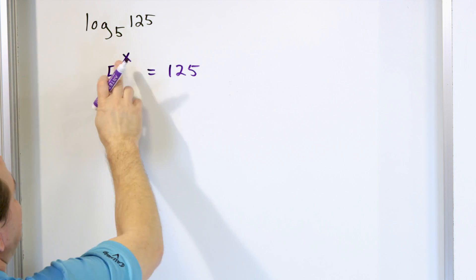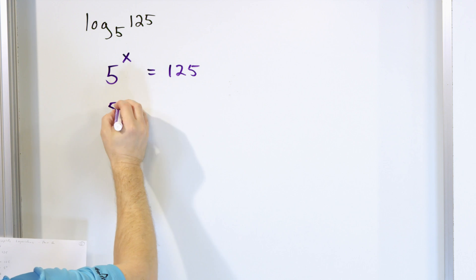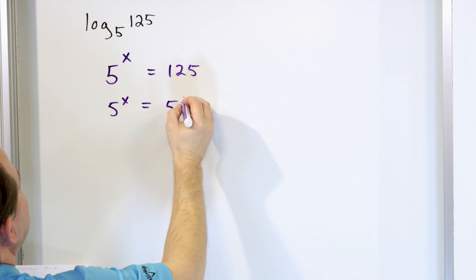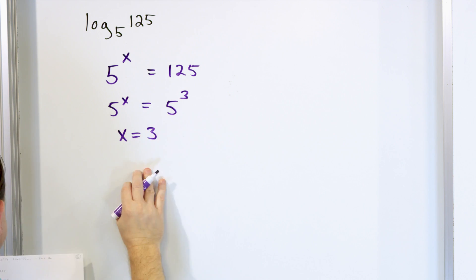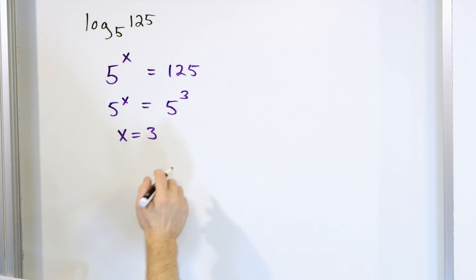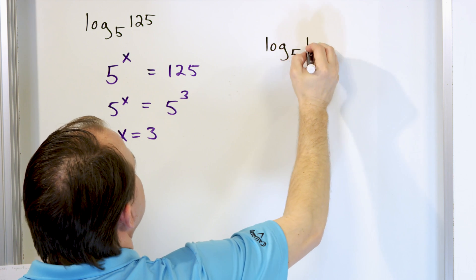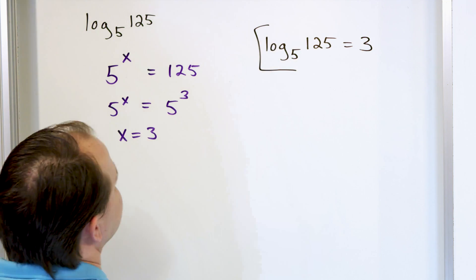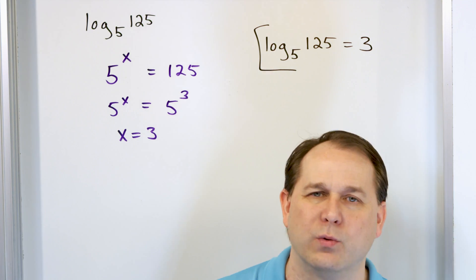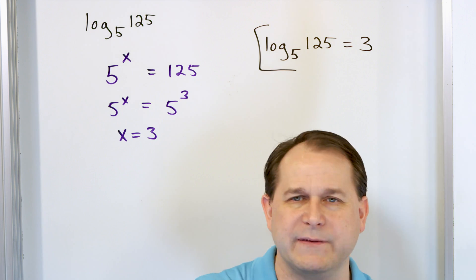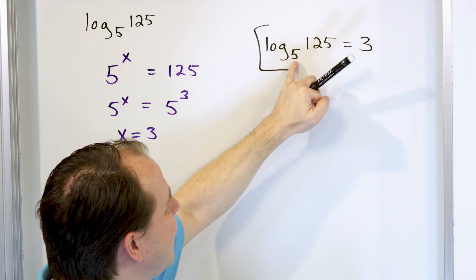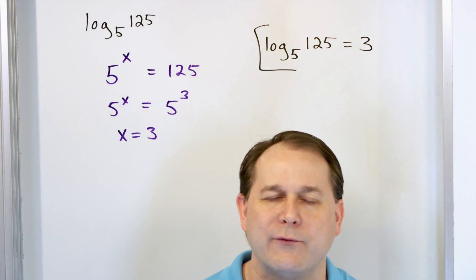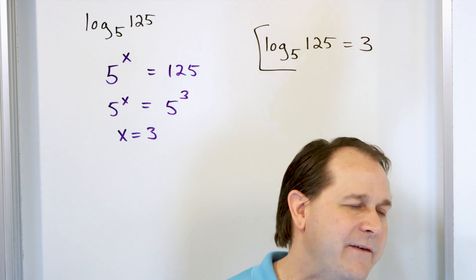The exponent we're calling x — so how do we calculate what x equals? We know that 125 can be written as 5 to the power of 3, because 5 times 5 is 25, and 25 times 5 is 125. Now we have the same base on both sides of the equal sign, so the exponents must be equal — x must equal 3. So the final answer is: logarithm base 5 of 125 is equal to 3. The logarithm is giving me back that exponent of 3, telling me that 5 raised to the 3rd power gives me 125.